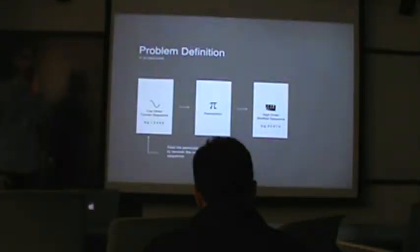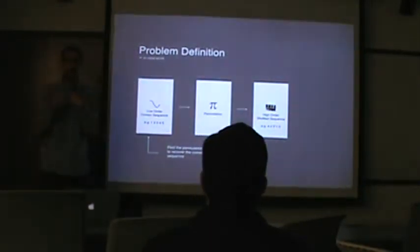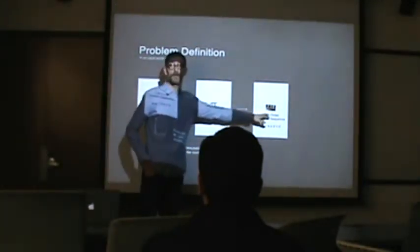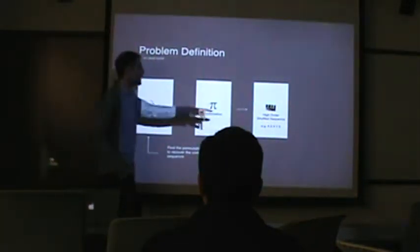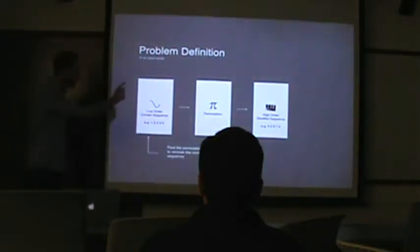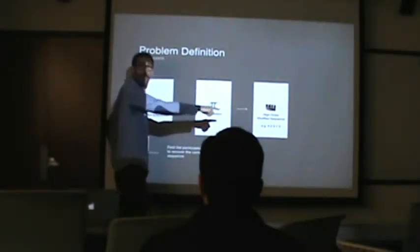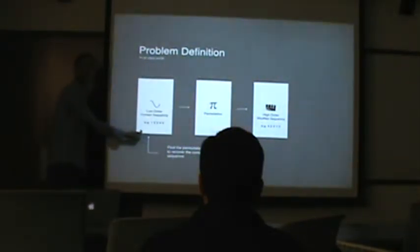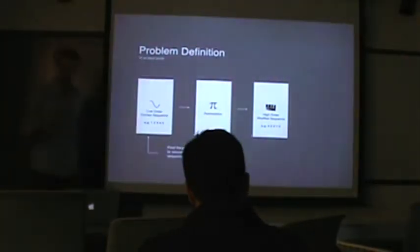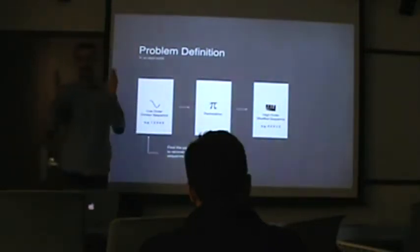So the problem definition becomes this: we were trying to sort things out. My claim is, if your signal comes from a physical phenomenon — which usually it does — it should have a simple form, a low-order AR sequence. If somebody shuffled it, it will look very ugly. The problem definition is: given a high-order shuffled sequence, I claim there exists a permutation that produces the simplest or lowest-order AR representation. I'm seeking the permutation that gives the minimum AR order. That's what I'm trying to solve.